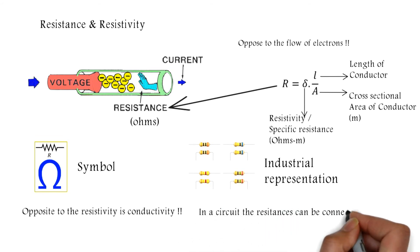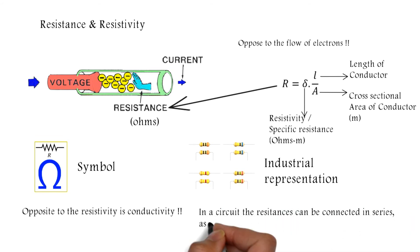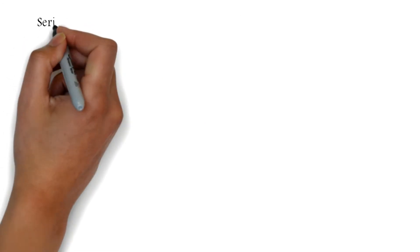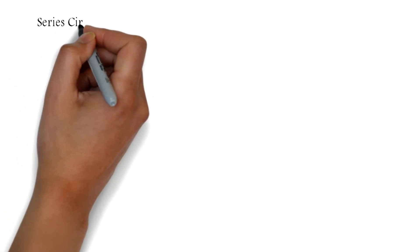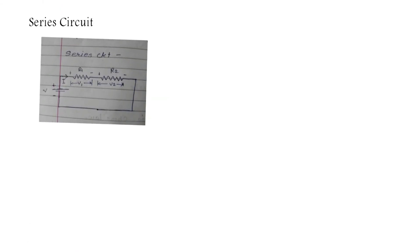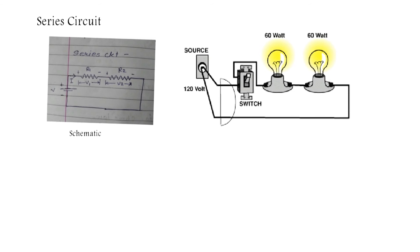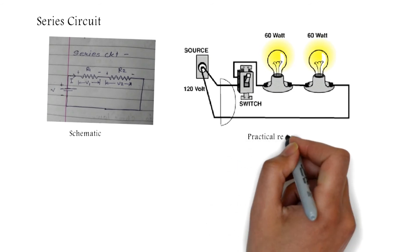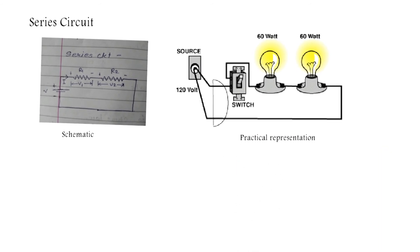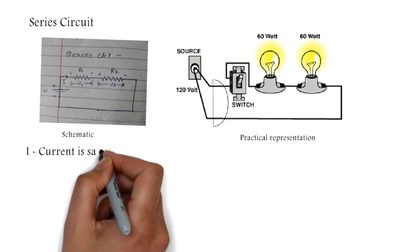In a circuit, resistances can be connected in series as well as in parallel. This image shows a series circuit — the schematic representation on one side and the actual representation of two lamps connected in a series circuit on the other.